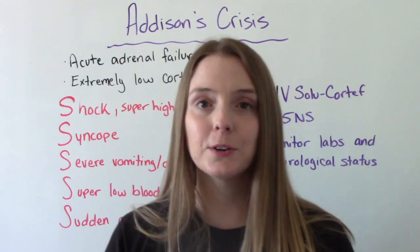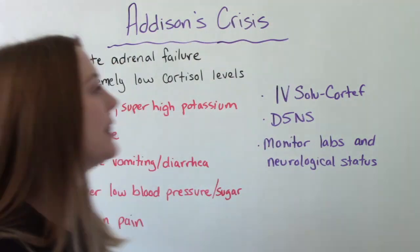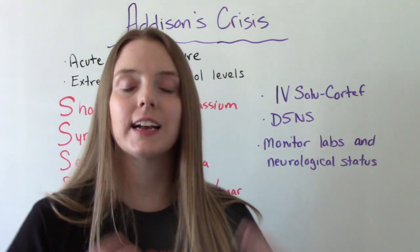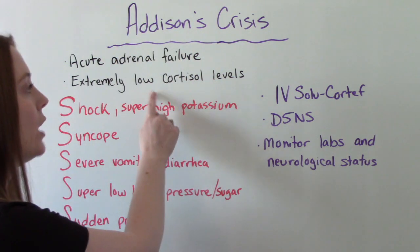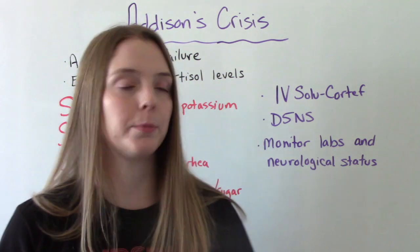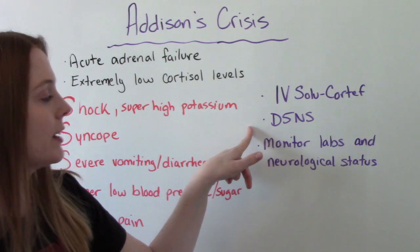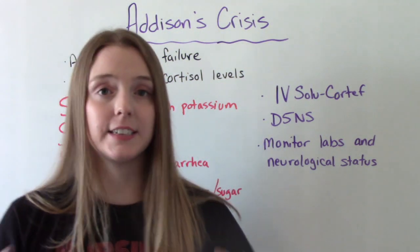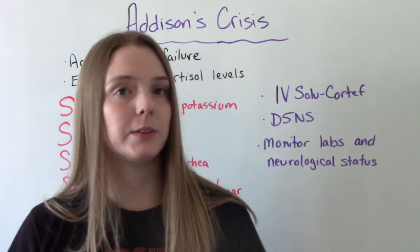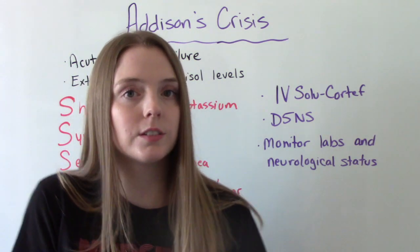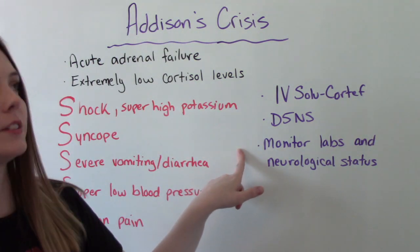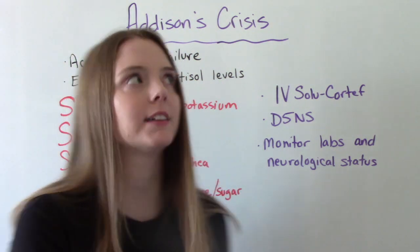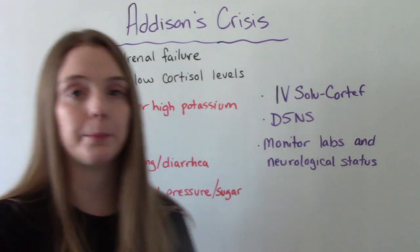To treat an Addisonian crisis, we give IV cortisol because that's what the body is critically lacking. Because blood sugar will be low, we typically administer D5 normal saline to provide glucose. We need to monitor lab values closely since those will tell us whether the patient is improving, and we should also perform a thorough neurological assessment.